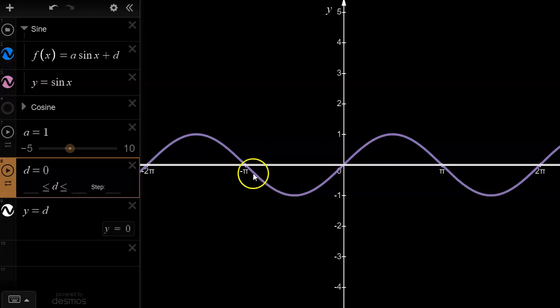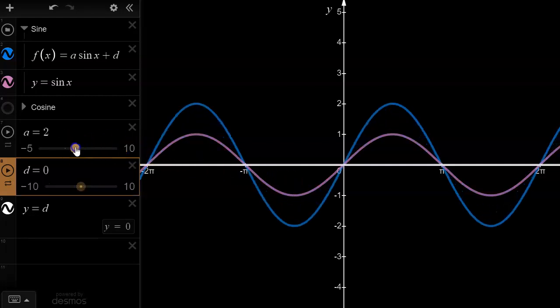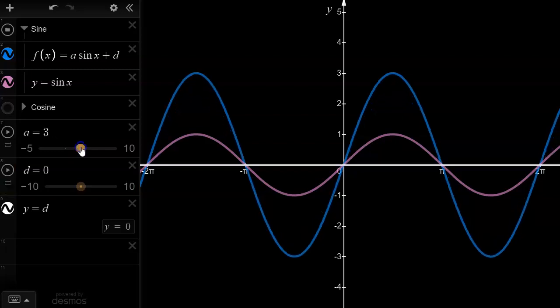When I apply a vertical stretch factor of 3 about the x-axis, you can see that my maximum point is now at positive 3, my minimum is at negative 3, and the range is everything in between those two points now, because the amplitude is 3 itself.